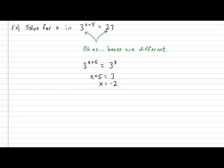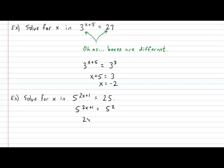Why don't you try one of these types of examples on your own? Solve for x in the expression 5 exponent 2x plus 1 equals 25. Pause the video and try it now. So, we have to be familiar with the bases of 5. The 25 can be rewritten in the same base as the left side if we write it as 5 squared. Now both bases are identical, so all we need to worry about is making sure the exponents are also identical. The left exponent equals the right exponent, giving us 2x equals 1, therefore x is equal to 1 half.